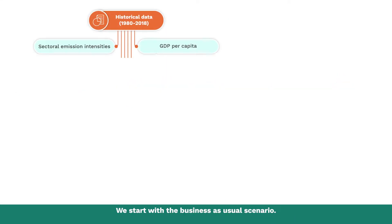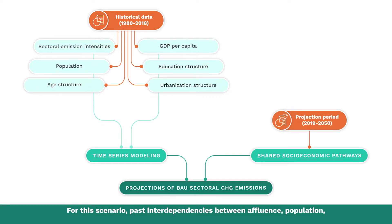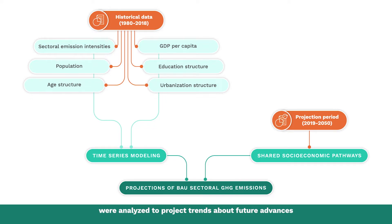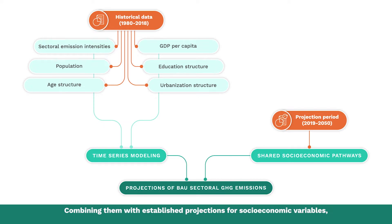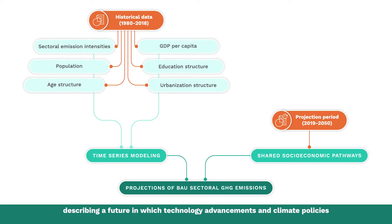We start with the business-as-usual scenario. For this scenario, past interdependencies between affluence, population, demographic characteristics, and technology were analyzed to project trends about future advances in technology and their dispersion. Combining them with established projections for socioeconomic variables, sectoral greenhouse gas emissions can be computed, describing a future in which technology advancements and climate policies do not deviate strongly from past patterns.